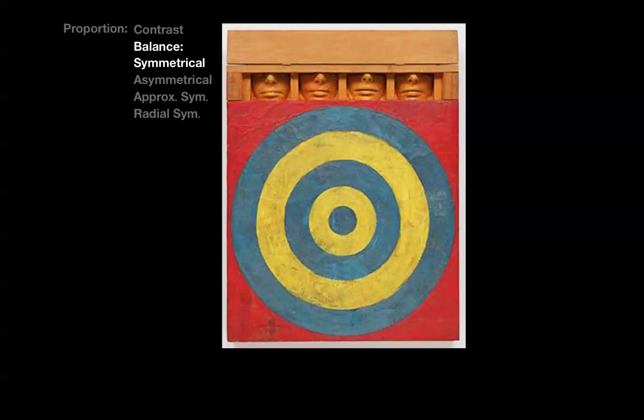Balance is about the distribution of weight or forces to achieve a state of harmony or equilibrium. There are four predominant means for controlling these underlying forces within a composition: symmetrical balance, asymmetrical balance, approximate symmetry, and radial symmetry.